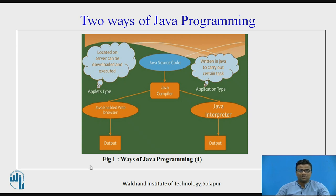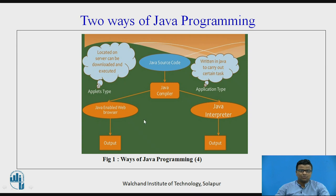There are two ways of Java programming. Java programming is always a two-step process: Java compiler and Java interpreter. Java source code, meaning the program, will be converted into machine code with the help of Java compiler and Java interpreter. If it is an application type, the output is obtained with the help of Java interpreter. If it is an applet type, we will get the output in the applet viewer or the web browser.